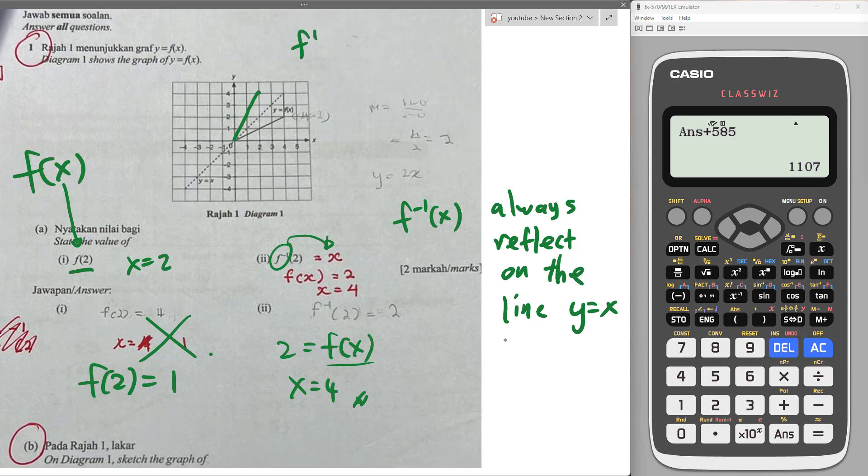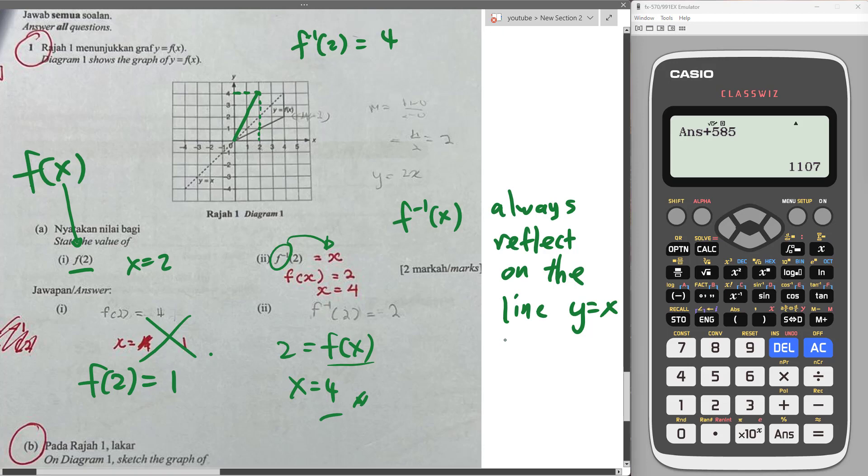Then if I want to do f inverse 2, right? That means right now my x value is 2. So my x value is 2. My f inverse will be 4 also. So it's still equals to 4. Okay? So I hope you understand about this.